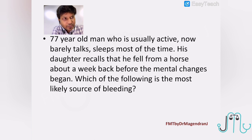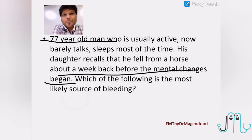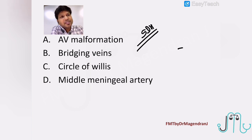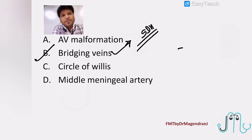A 77-year-old man who is usually active now barely talks and sleeps most of the time. His daughter recalls that he fell from a house about a week before the mental changes began. This is an elderly person with a trivial trauma, and symptoms appearing after a week — a typical case of subdural hemorrhage (SDH). The bridging veins get ruptured, causing slow oozing; over a period of time the blood accumulates, causing brain compression and symptoms. That is why it presents after few weeks, sometimes even months. This is not epidural — this is subdural hemorrhage.